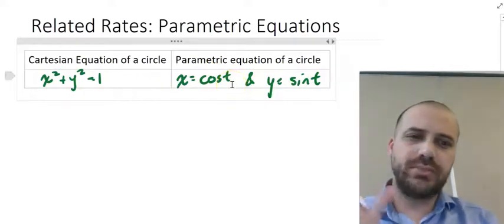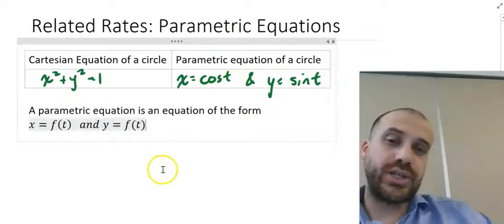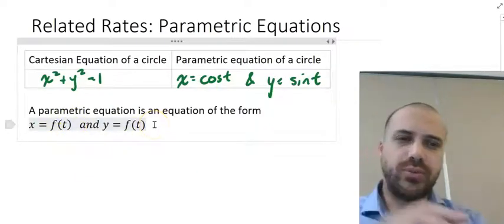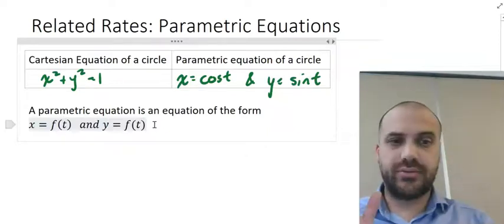So we can do this more generally. A parametric equation is an equation of the form x equals f of t and y equals f of t. Now, what does this have to do with related rates?